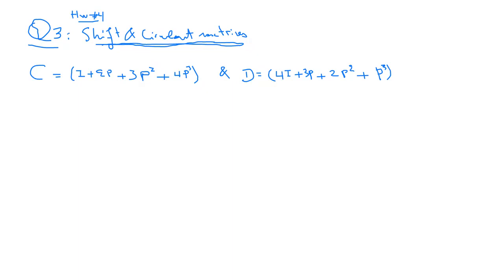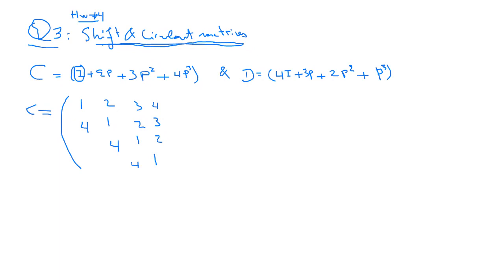Let's write them in detail. For matrix C, on the diagonal we have 1's because we have I. Then we have 2P so we have 2's here. Then we have 3P squared, we have 3's here, and we have 4. We complete this matrix so that it becomes a circulant matrix. This is C.